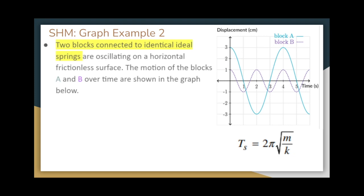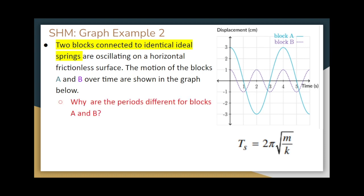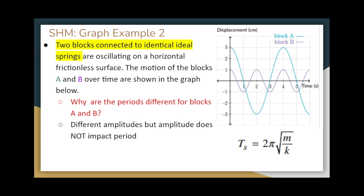Two blocks connected to identical ideal springs are oscillating on a horizontal frictionless surface. Block B has a period of two seconds and block A has a period of four seconds, so block A's period is twice as large. Looking at the spring period equation T_s equals 2 pi times the square root of m over k, amplitude does not affect period. Since they use identical springs, k is the same for both. Therefore the only difference is mass — since block A has a bigger period, block A must be heavier than block B.